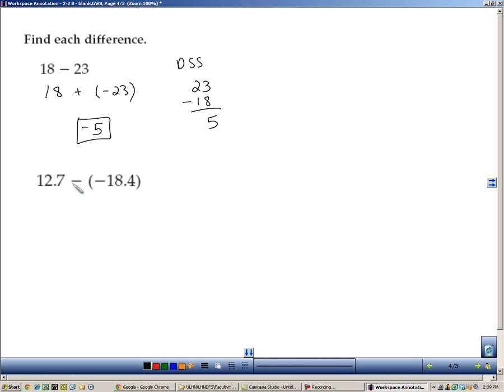Next one: 12.7 minus a negative 18.4. We're going to change this to addition by adding the additive inverse, which is positive 18.4 or adding the opposite. Same sign add. This one's just a regular addition problem. There's no negatives here. So we're just going to add 18.4 and 12.7, which gives us 31.1.